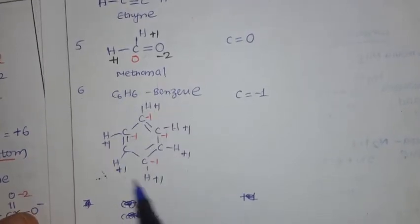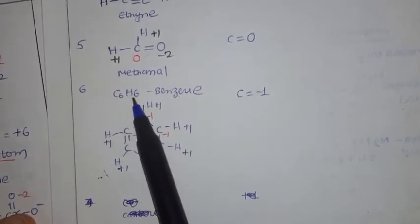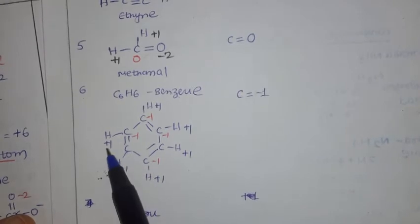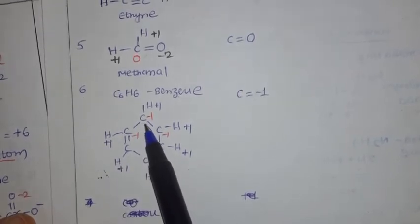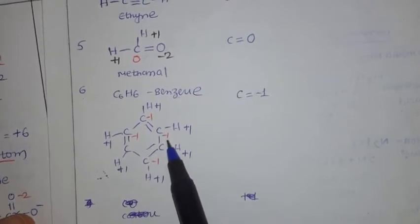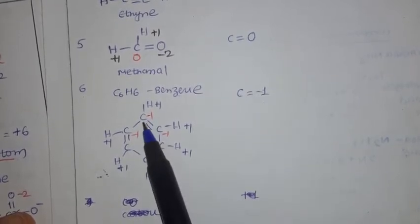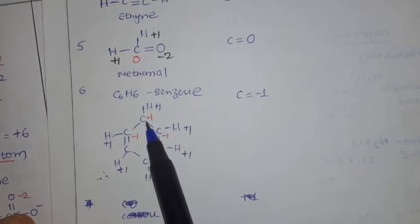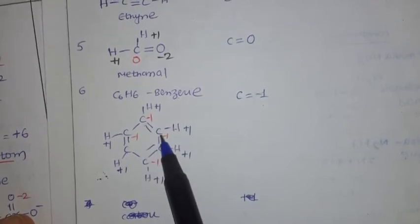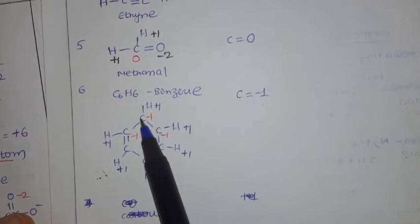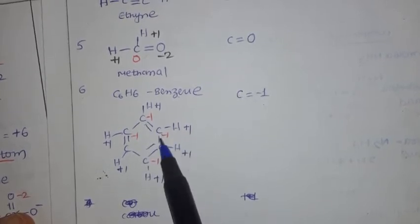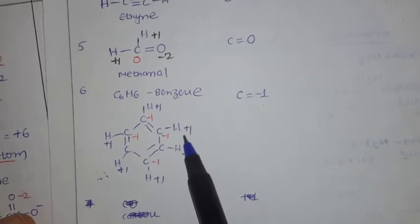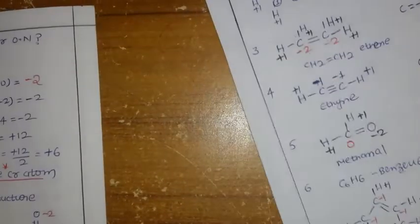In benzene C6H6, there are 6 carbon and 6 hydrogen atoms. In each C-H bond, hydrogen gives plus 1 and carbon gets minus 1. Between carbon-carbon bonds, both are the same element with the same electronegativity, so no electron transfer occurs. Therefore, in benzene, the oxidation number of each carbon is minus 1.